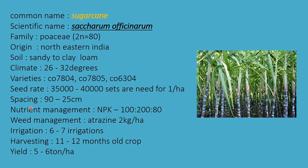Spacing is 90 × 25 cm. Nutrient management is NPK 100 to 180 kg; phosphorus and potassium applied in basal doses. Weed management uses atrazine at 2 kg per hectare as a pre-emergent herbicide. Irrigation: 6 to 7 times for the entire crop. Harvesting when the crop age is 11 to 12 months. Yield is 5 to 6 tons per hectare.